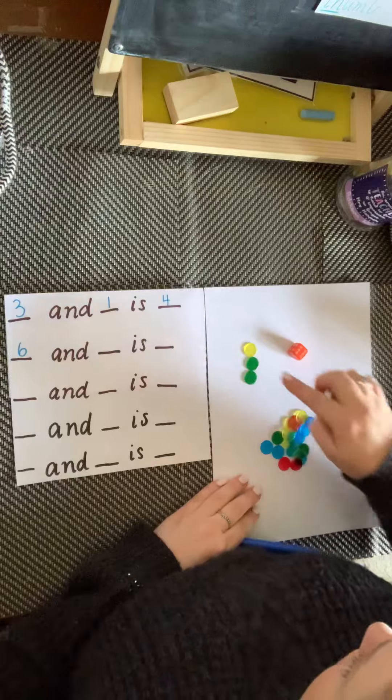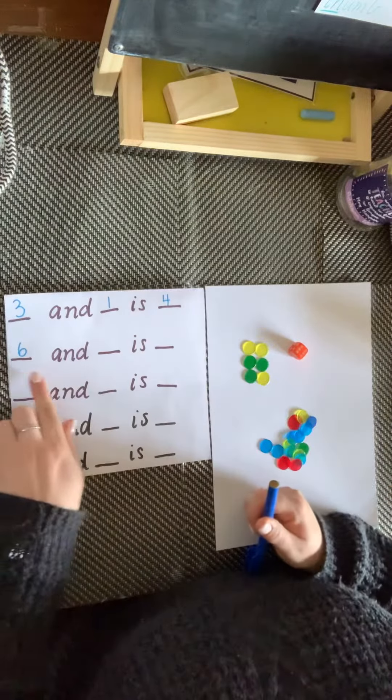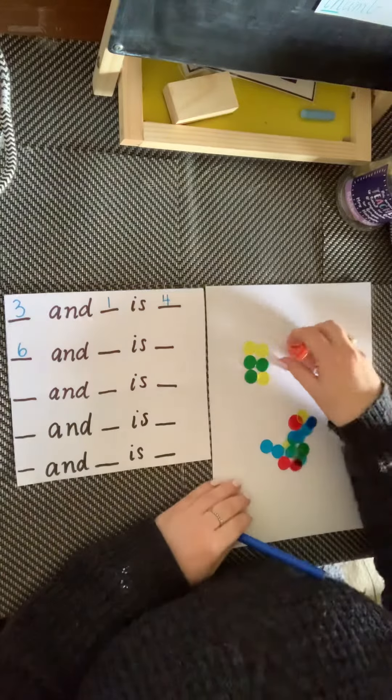One, two, three, four, five, six. Six and, roll the dice again.